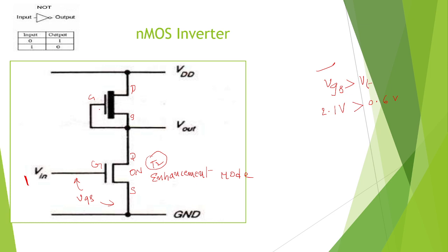Here you can see the source and gate are interconnected for the depletion mode transistor — it is NMOS only. Both are NMOS transistors but this one is depletion mode. It is always in ON condition because source and gate are interconnected. So this transistor T1 is ON, and T2 is also ON. VDD is flowing through this direction and the total VDD is grounded.